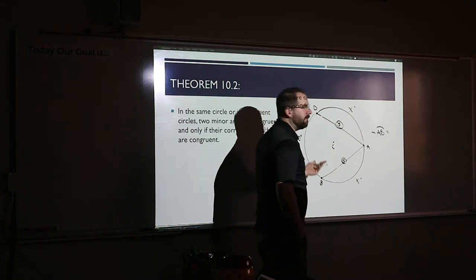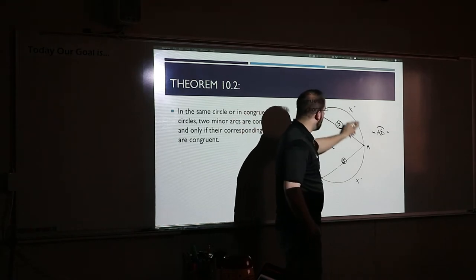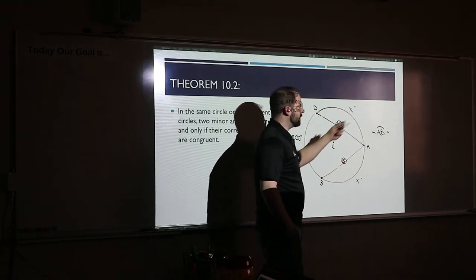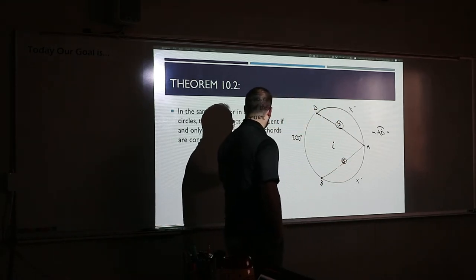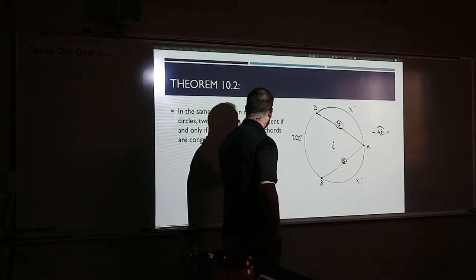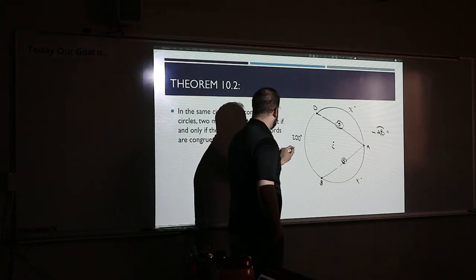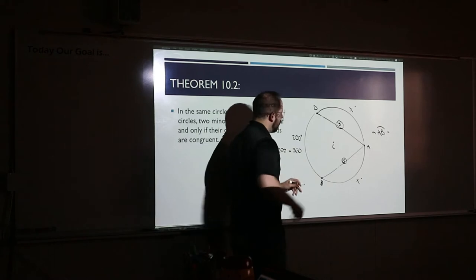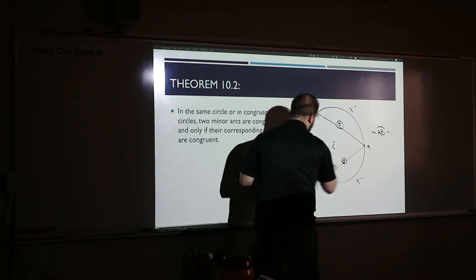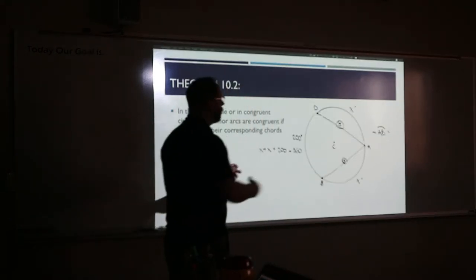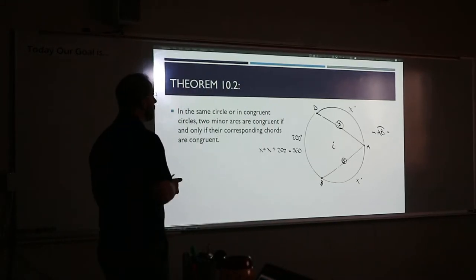So you add the two x's together plus that 200 over here, and you get 360 — because the entire arcs add together to make 360, since that's your full circle.